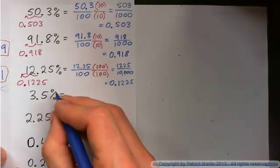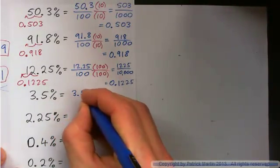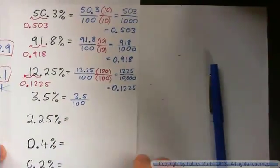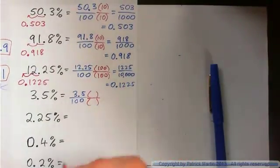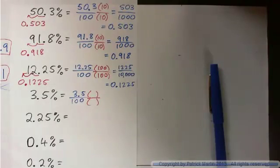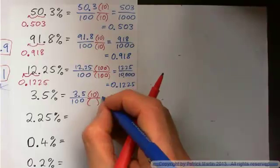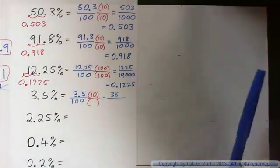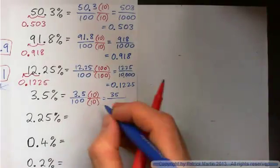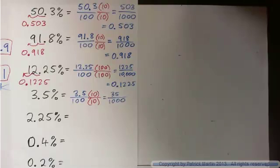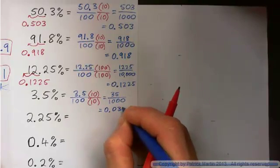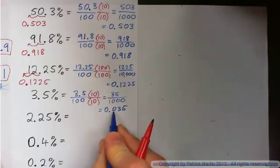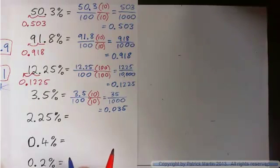So 3.5 per cent is 3.5 divided by 100. Now if I want to turn the 3.5 into a whole number, I can multiply it by 10, because then 3.5 times 10 is 35. But I must multiply the bottom by 10. 100 times 10 is 1,000. So I have 35 thousandths. And as a decimal, that is 0.035. Because we have units, tenths, hundredths, thousandths. 35 thousandths.